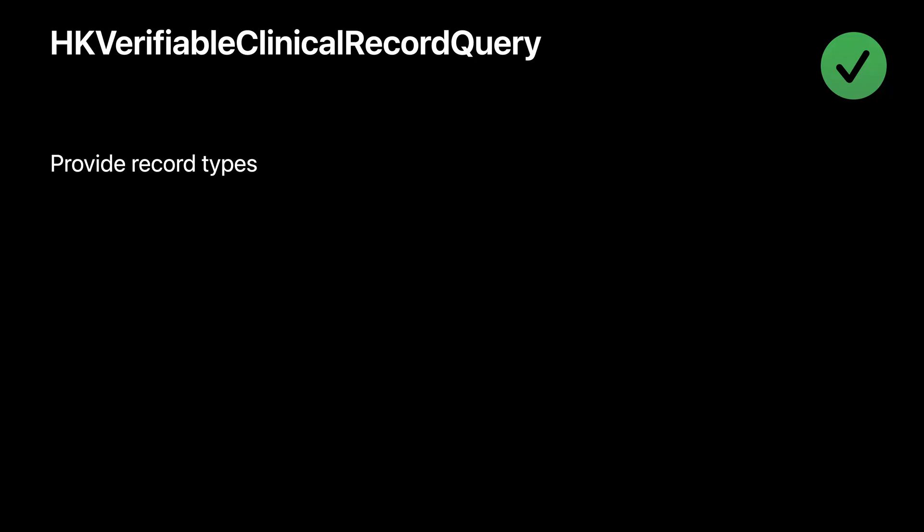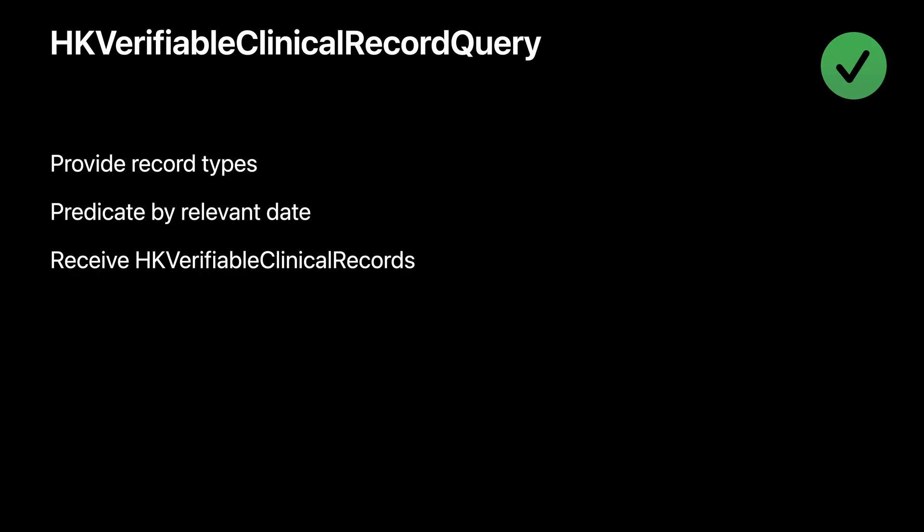Let's look at HKVerifiableClinicalRecordQuery in more detail. To initialize it, you will first provide a string array of record types, which we defined earlier as the type of data present in a verifiable health record. Only records with all provided record types present will be shown in the authorization sheet. Like other HealthKit queries, you also have the option to add a predicate to further filter the set of samples for authorization. We are providing a convenience constructor to create a predicate for records with relevant dates within a date interval.